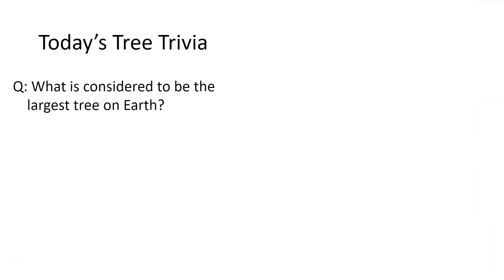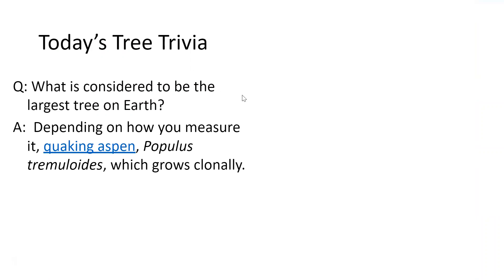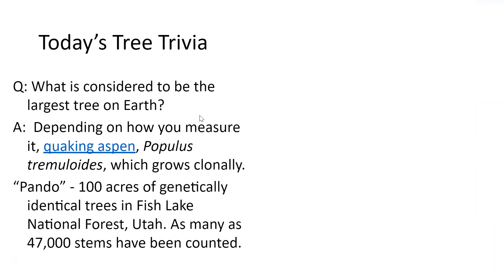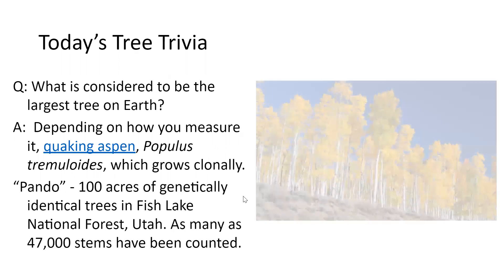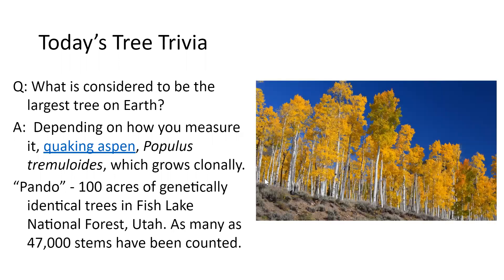Before we get started, today's tree trivia: what is considered to be the largest tree on earth? The answer depends on how you measure it. Quaking aspen, Populus tremuloides, which you'll learn in lab, grows clonally. There's a famous quaking aspen called Pando, which covers 100 acres — genetically identical trees growing in Fish Lake National Forest in Utah. As many as 47,000 stems have been counted, and they're considering this a single tree because it's clonal. If you only measure a single trunk, you'd have a different answer.